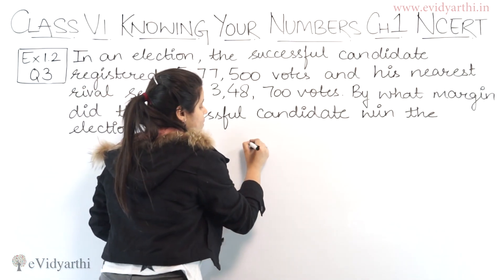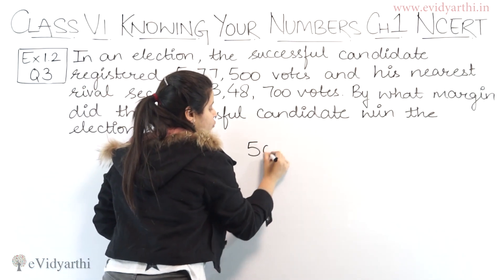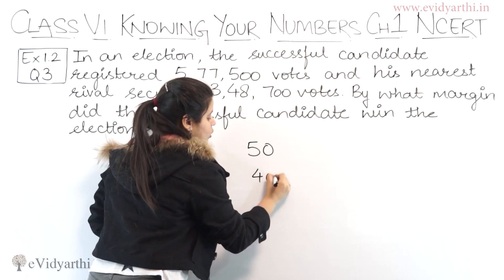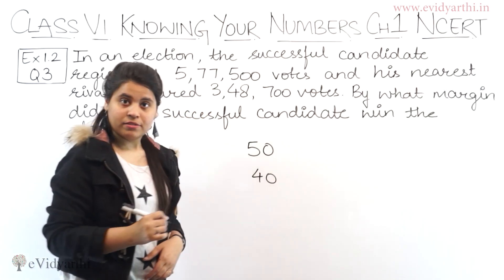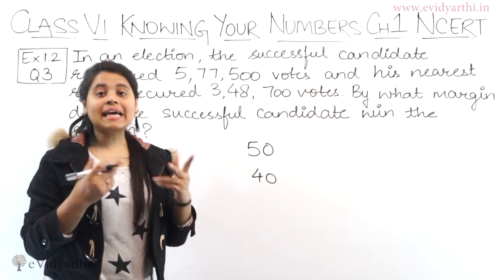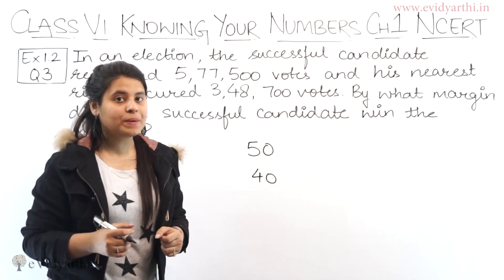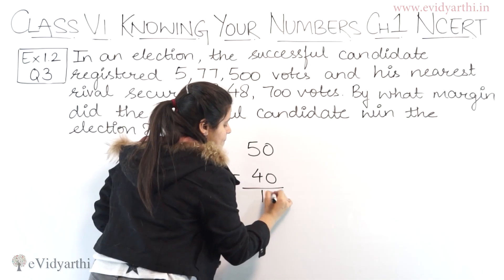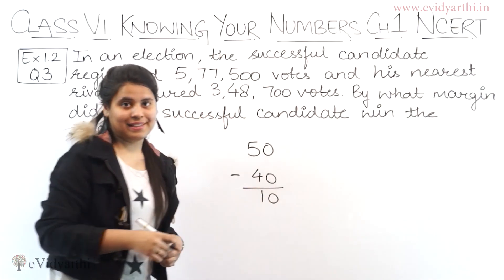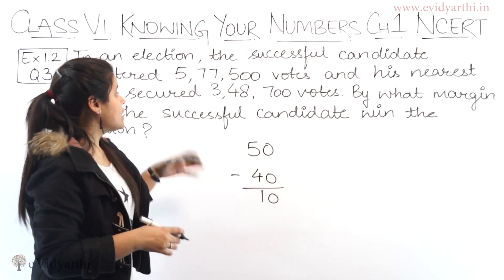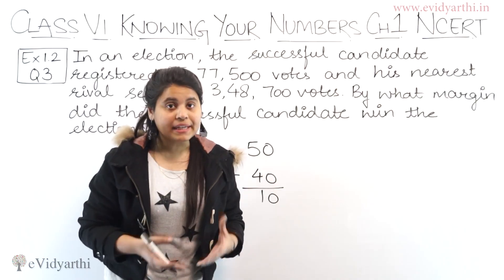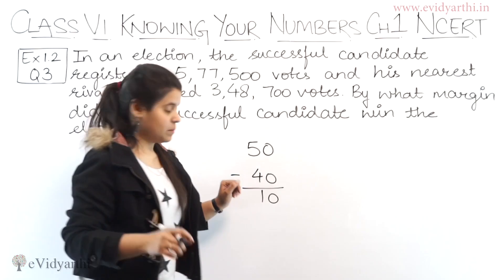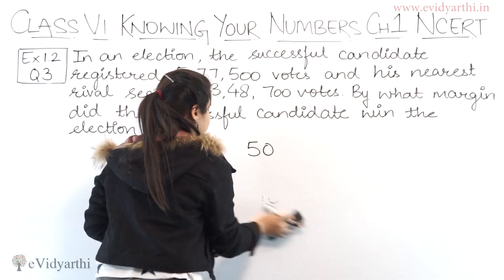For example, if I say that you have 50 rupees and you have 40 rupees, how many more do you have? 10 rupees. So we do minus to find that difference. So whenever we need to find such a margin, we will subtract. Let's begin with the solution.